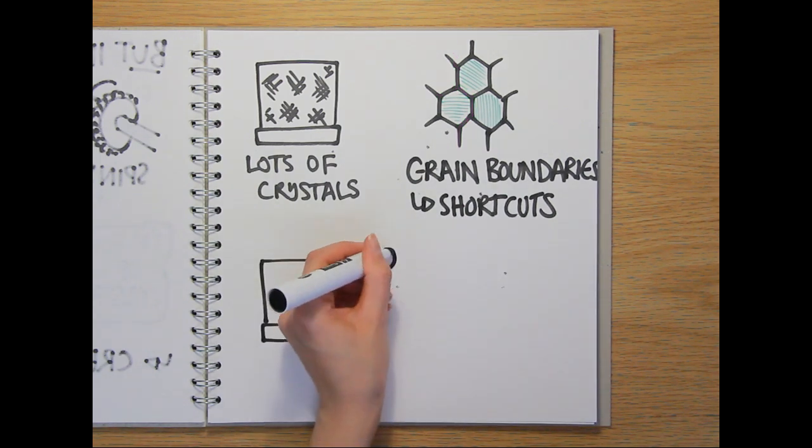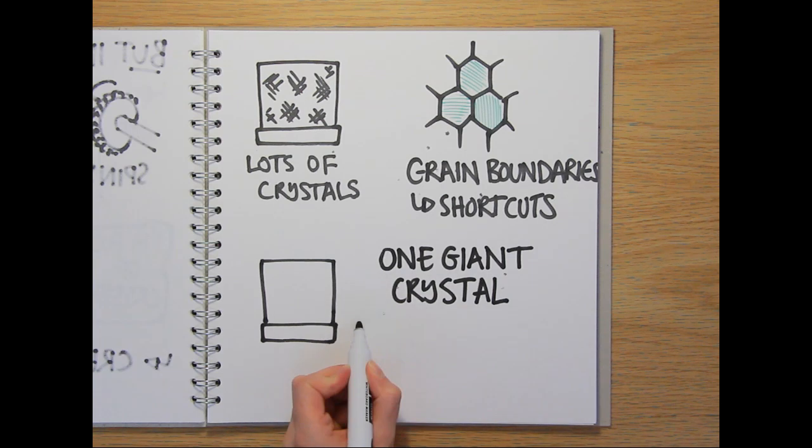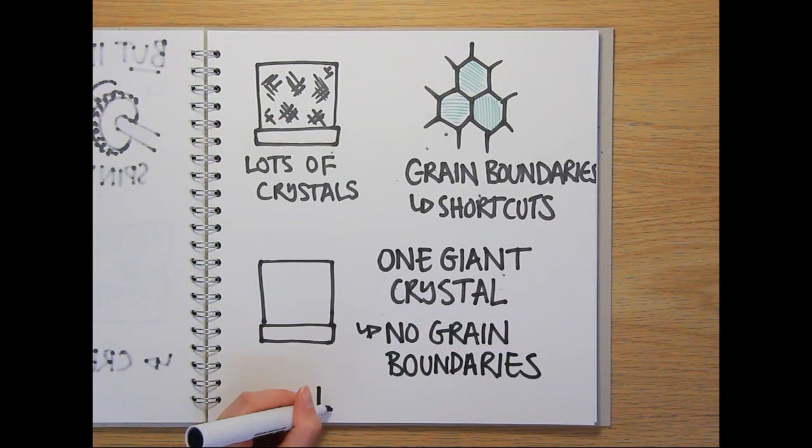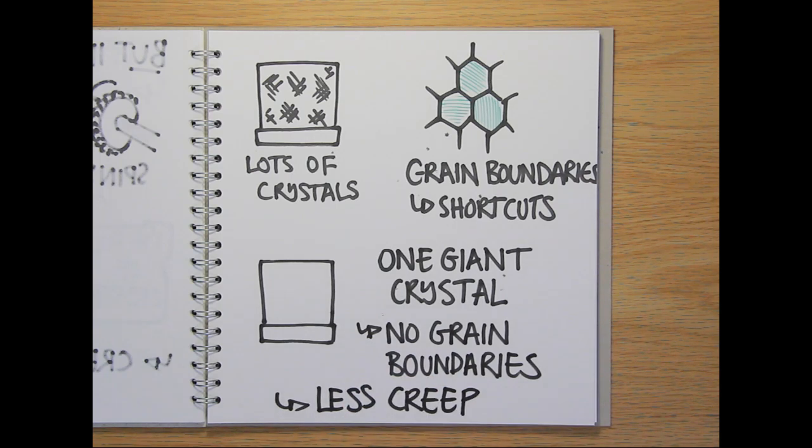So, turbine blades are made so that they're formed of just one giant crystal. This means there are no grain boundaries, so that the atoms diffuse much more slowly and there's less creep.